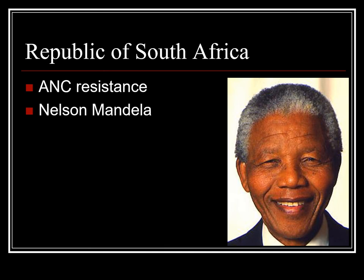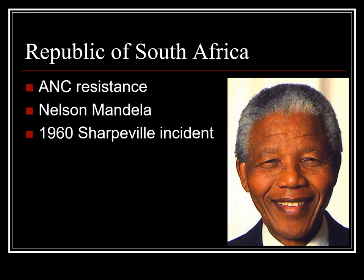The chief organization to oppose apartheid was the African National Congress. At first, they were led by Western-educated, assimilated black men and consequently did not have a large following — until the very charismatic Nelson Mandela started bridging the gap. In 1960, nonviolent protests against the pass laws ended in police firing on the crowd, killing 69 and injuring 180.